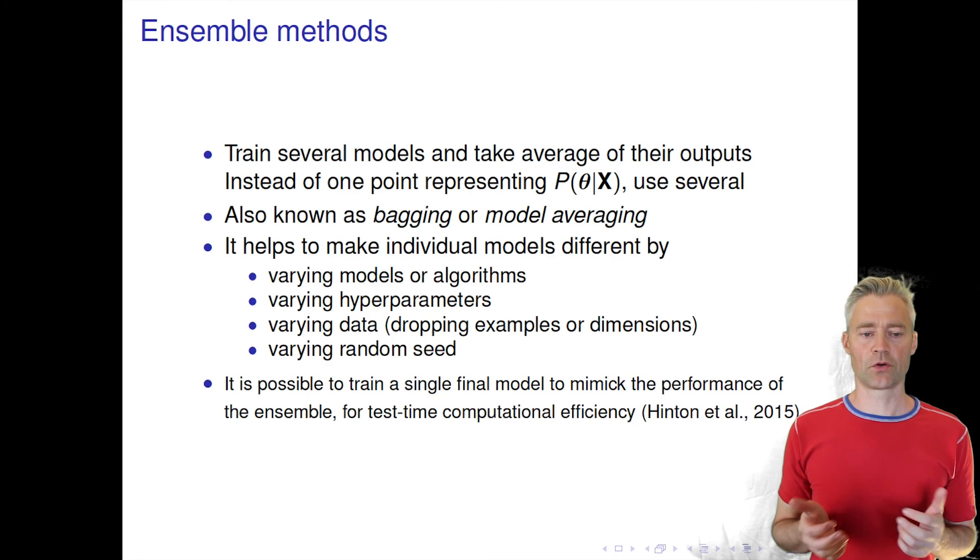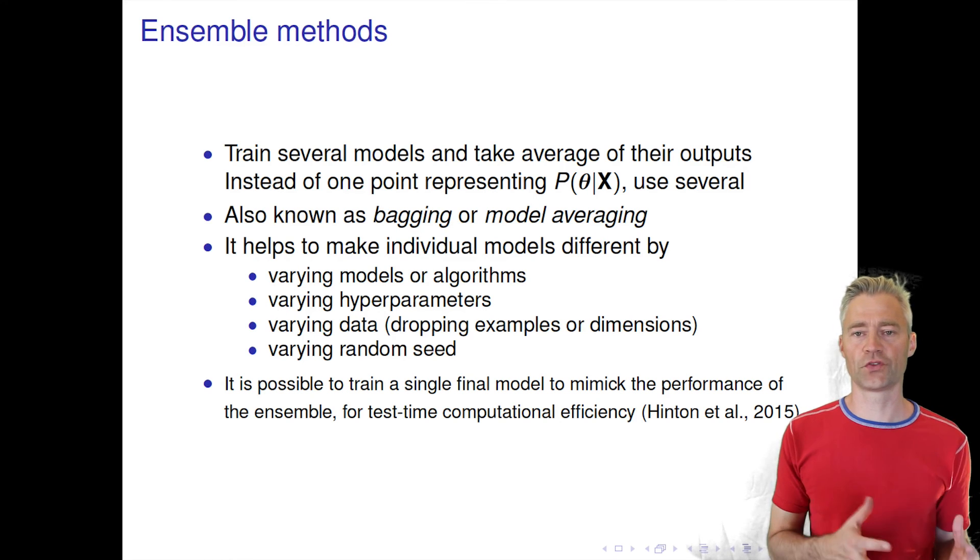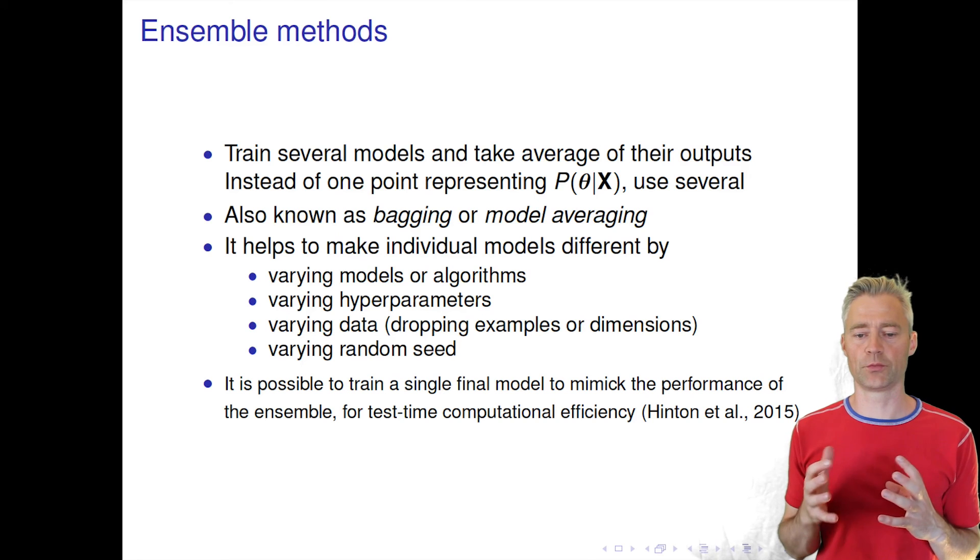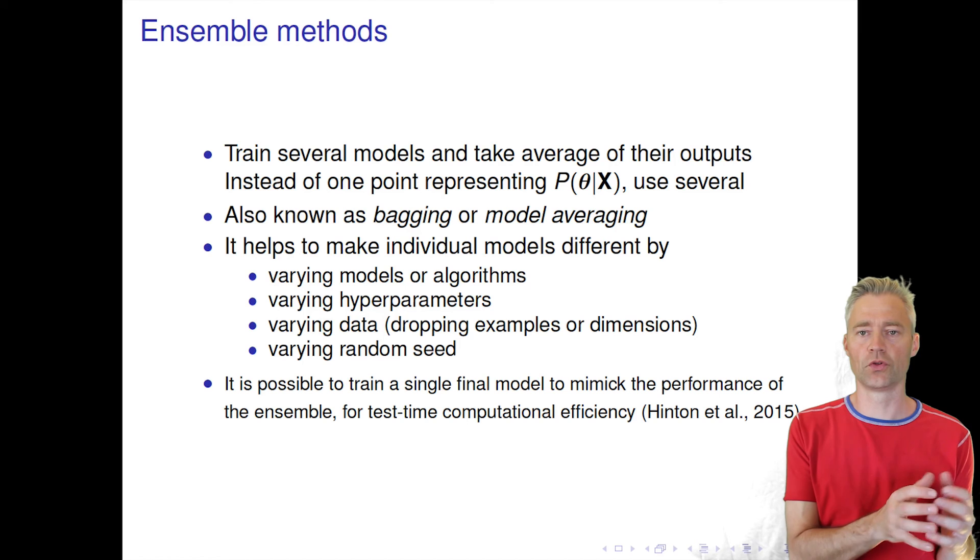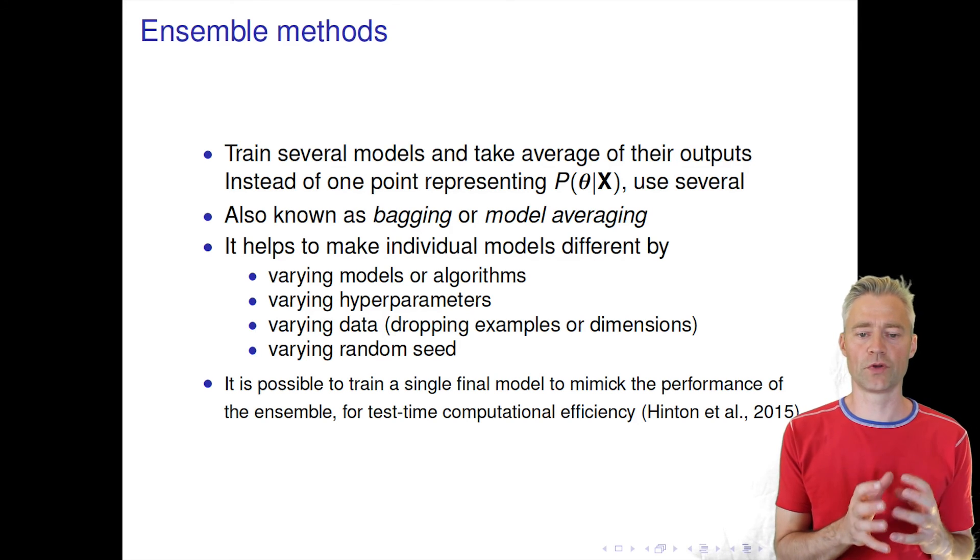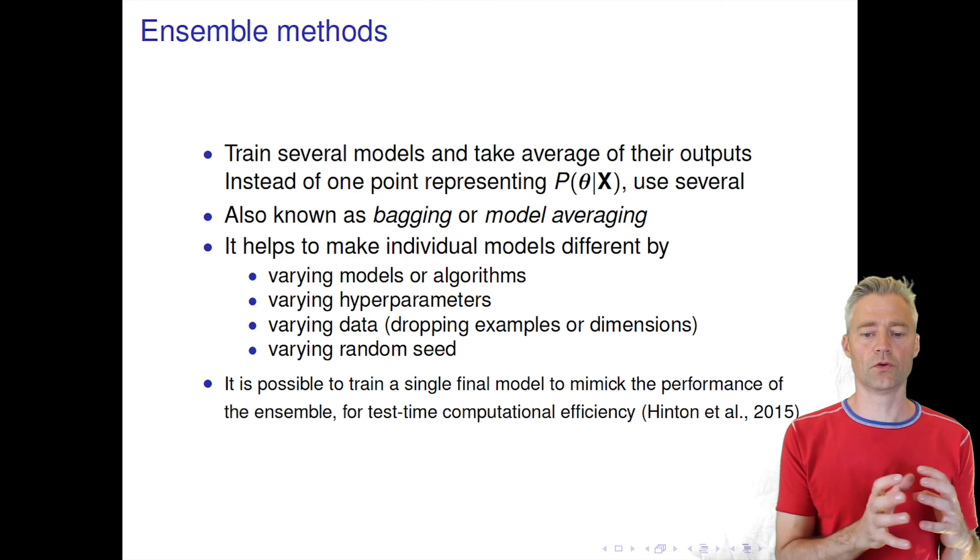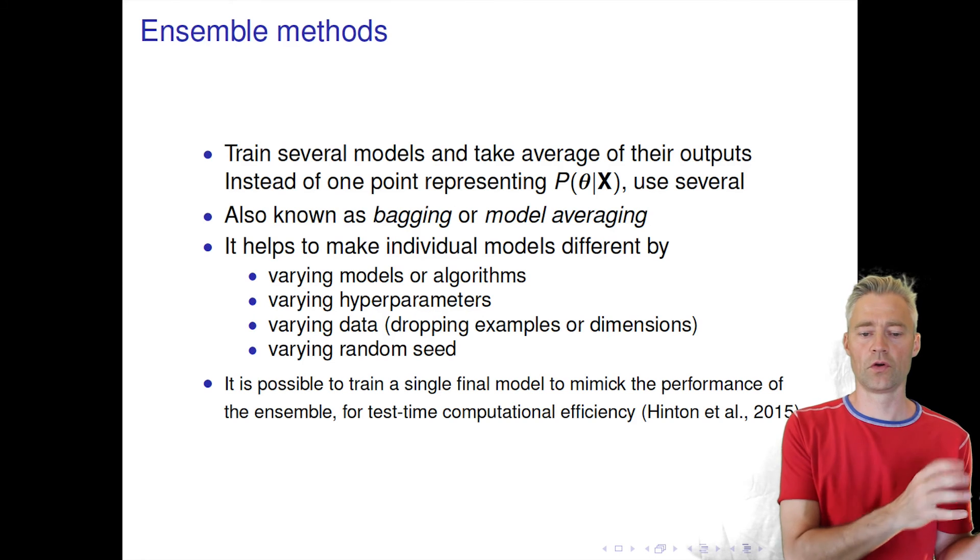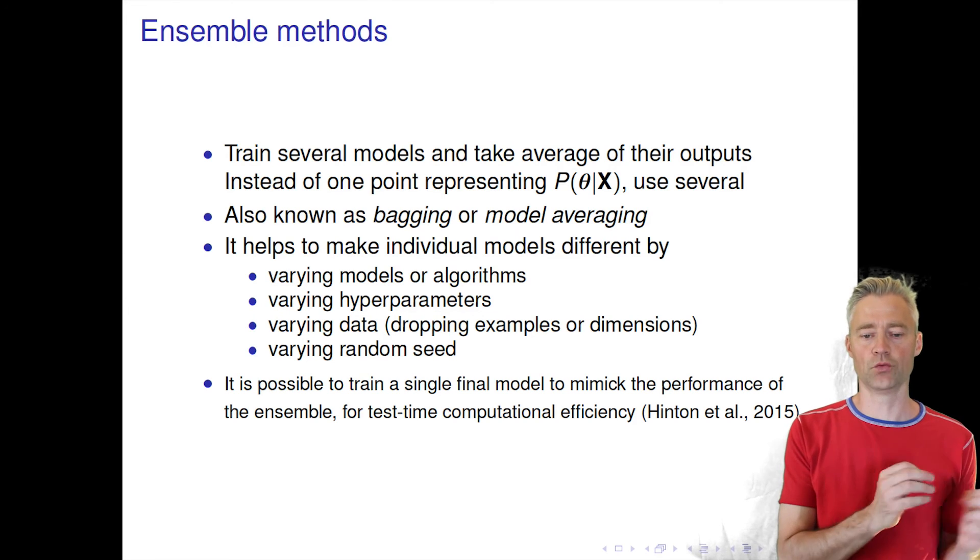Next I'll talk about ensemble methods. As I already said, the Bayesian approach can be thought about as an ensemble method because there you have a posterior distribution over your parameters. So that means for each draw from this posterior distribution you have a new network, and when you make predictions you should in principle make predictions for each of these networks that you draw from your posterior distribution. This averaging will always give you better performance.